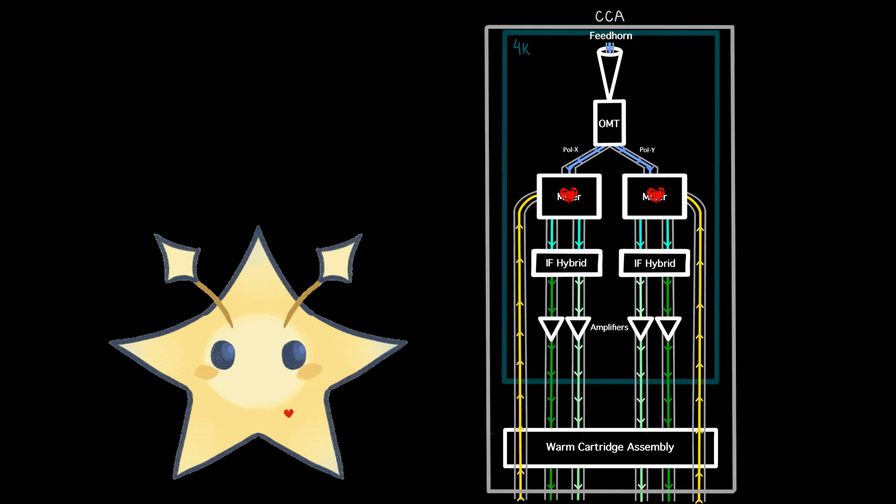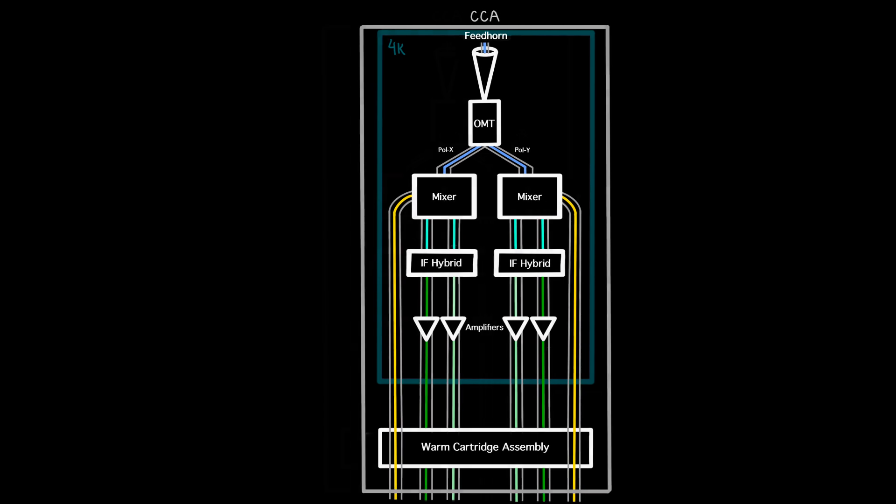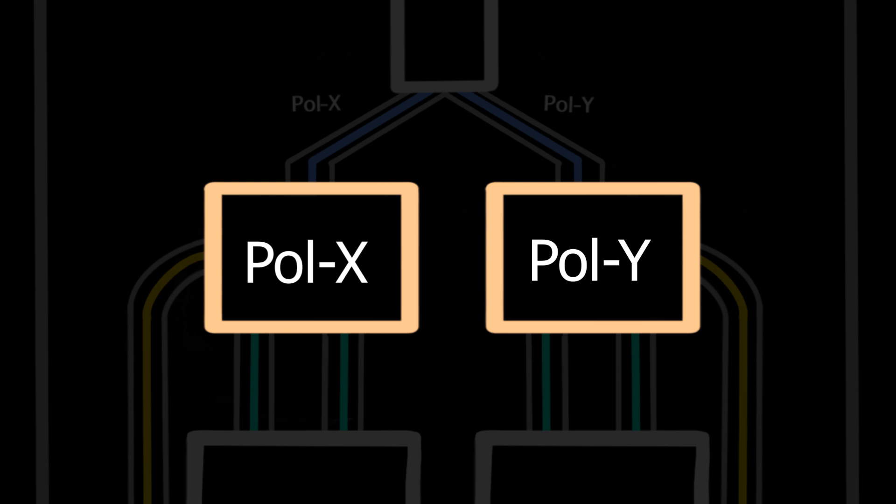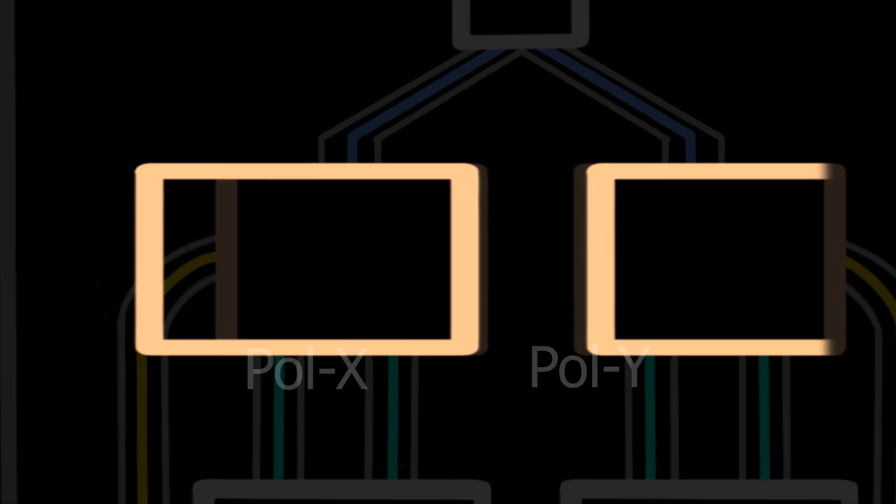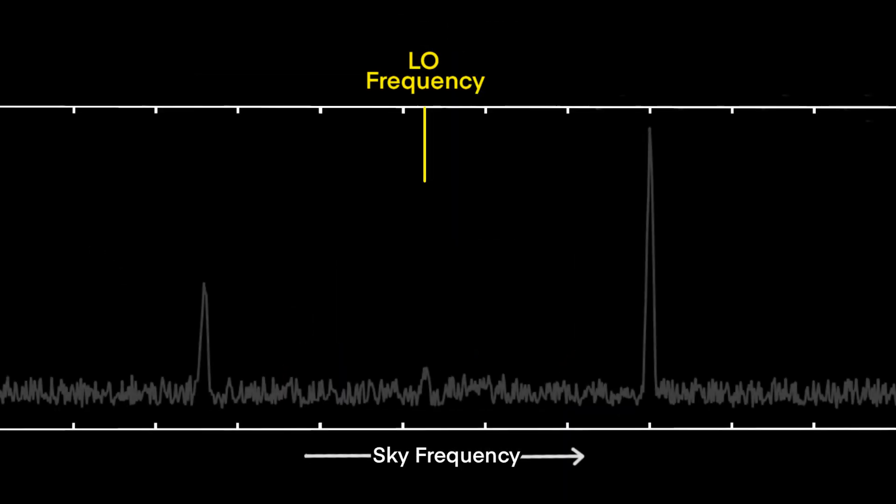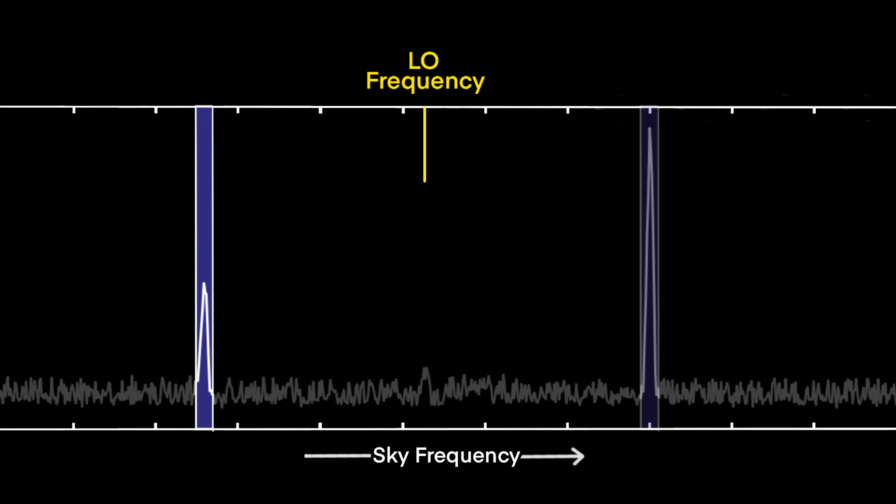Finally, we have arrived at the heart of the heterodyne receiver design, with a device known as a mixer block, where the down-conversion occurs. There are two mixer blocks, one for each polarization. Inside each mixer block is a waveguide network which feeds the sky signal along with the signal from a tunable oscillator, known as the local oscillator, or LO, into the superconducting mixers. The LO is tuned to a frequency a few gigahertz above or below the sky frequency, often referred to as the radio frequency, or RF, which we want to detect.